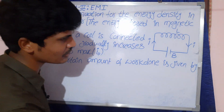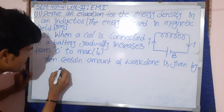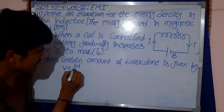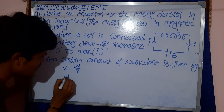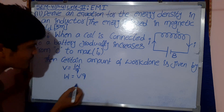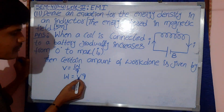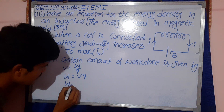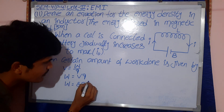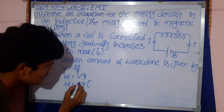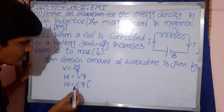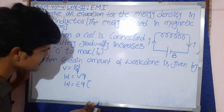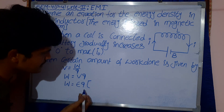First, the potential V is given by the formula V = W/Q, so W = VQ. Here W means work, V means potential, and Q means charge. Next, W = εQ, since epsilon (ε) means potential — the units are the same, so V is replaced by ε.